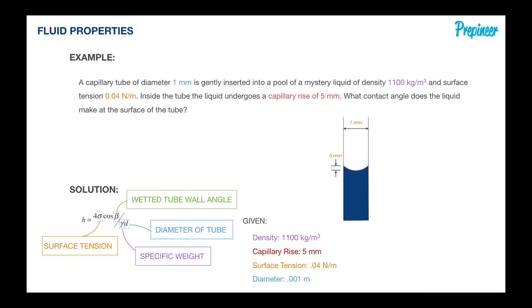You've also got to convert that capillary rise. In this case, I haven't converted it yet, but I do in the calculations. We're going to determine the specific weight of this mystery liquid, simply the density times local gravity. We're going to get 10,791.